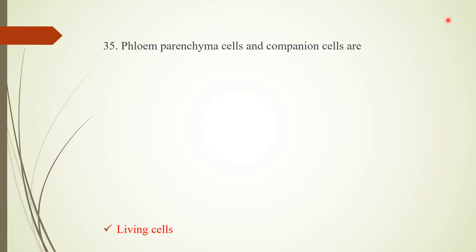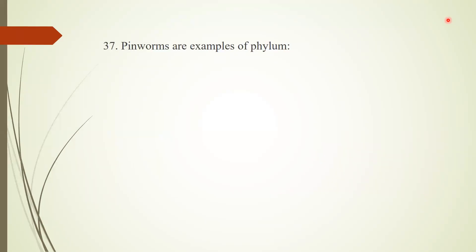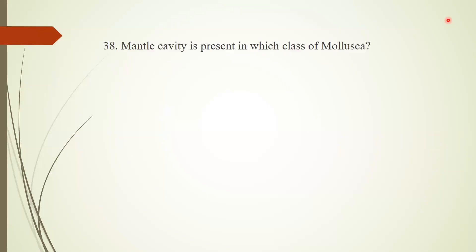Question 33: Muscle cells were first seen in cnidarians. Question 34: The diaphragm has which type of muscles? Answer: the diaphragm is made up of skeletal muscles. Question 35: Phloem parenchyma cells and companion cells are both living cells. Question 36: The tissue found in young stems, petioles, and leaf veins is collenchyma, which is present in young stems or herbaceous plants.